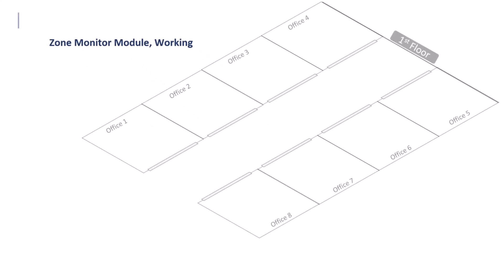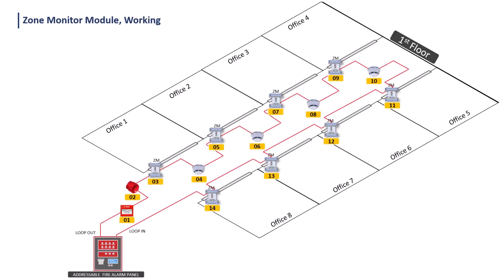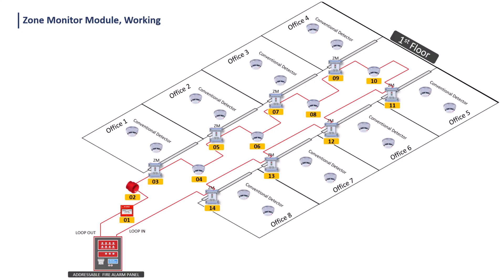Let's look at the working of the zone monitor module with an example. The zone monitor module works like a conventional one-zone panel. Consider a commercial building where an addressable fire alarm system is installed in the common passage and area, and conventional detectors are installed in individual offices. We use a zone monitor with the addressable fire alarm system to connect the conventional detector from the office and assign an address to the zone monitor module to define the office number in the fire alarm panel. This accomplishes two tasks: we don't have to install a conventional panel in the office, and we get the pin location of the office.